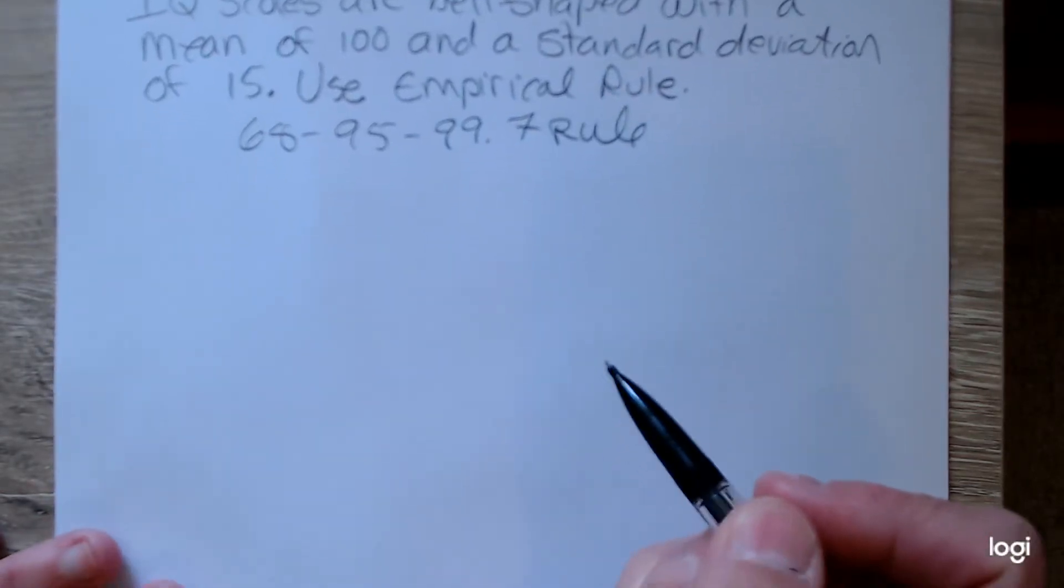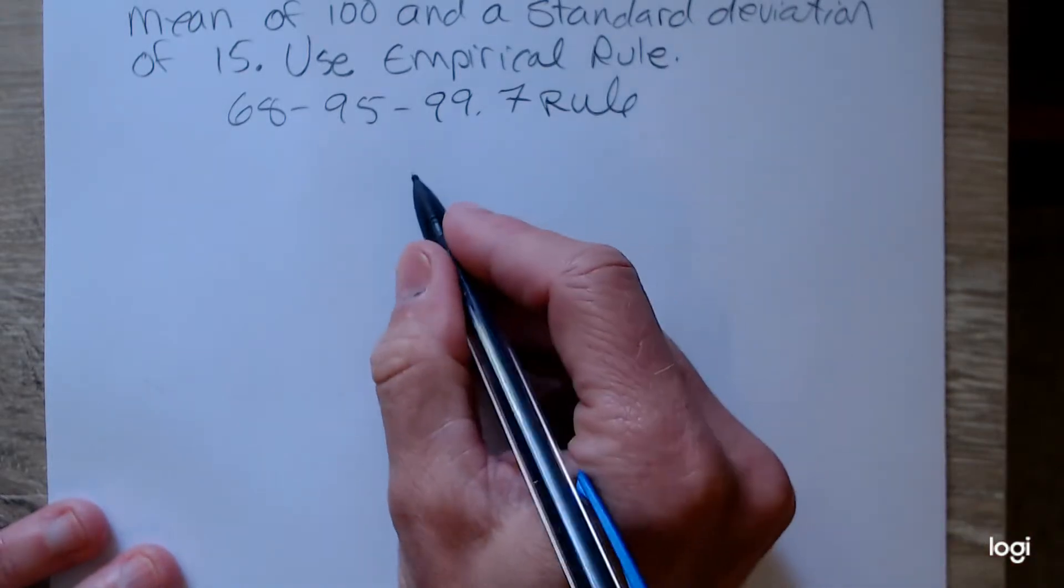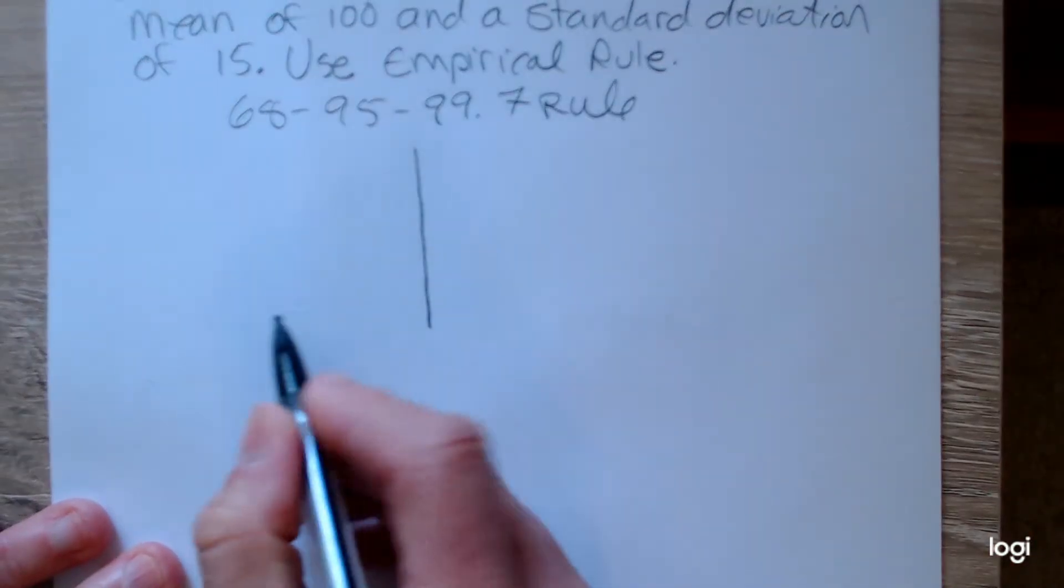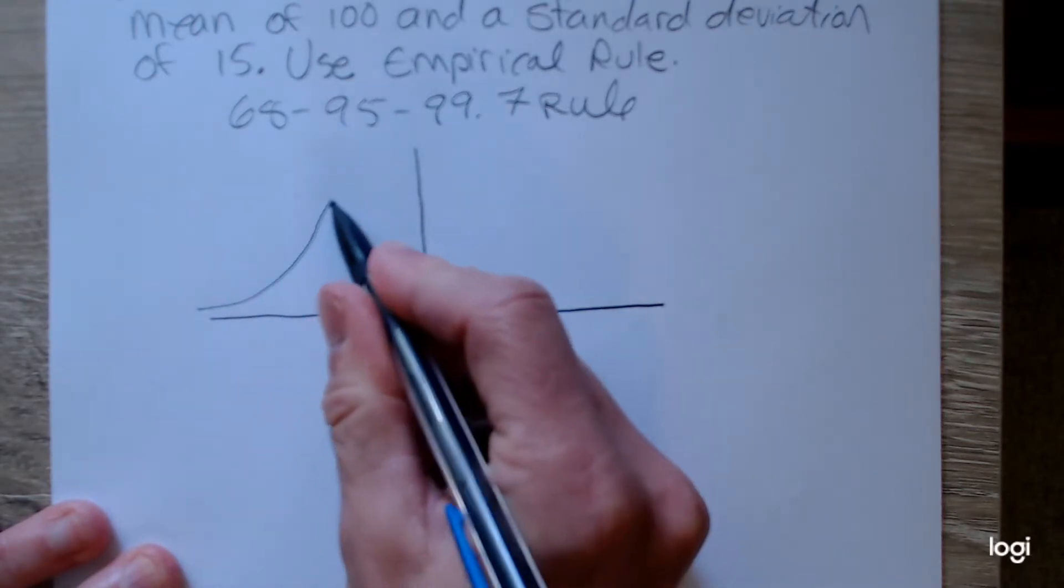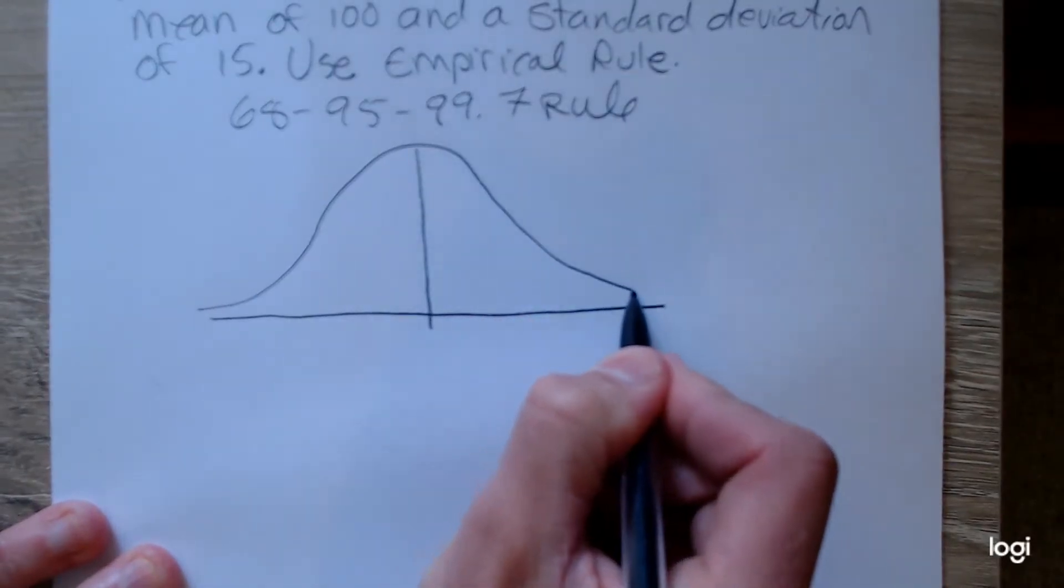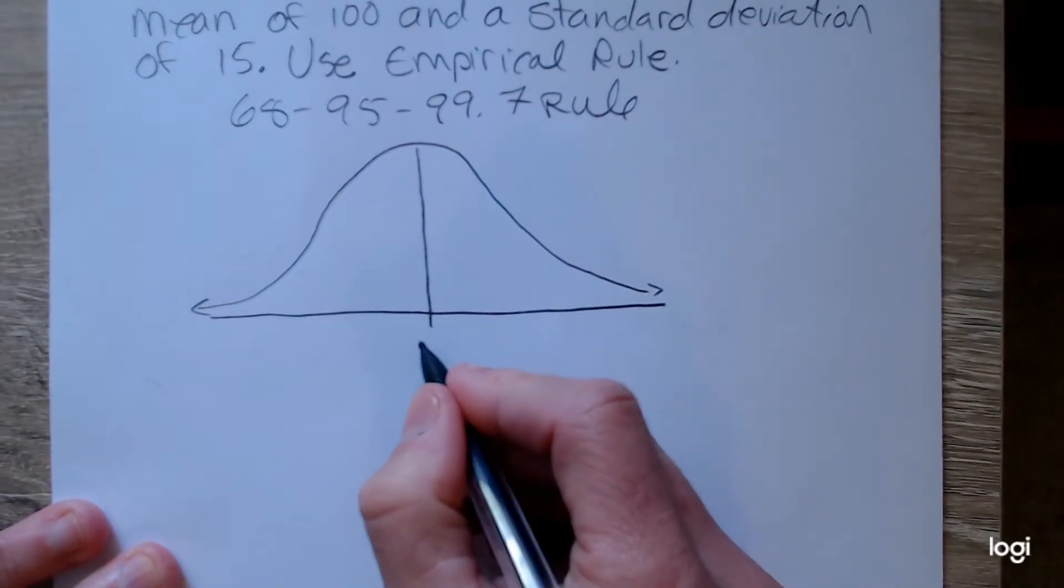So I find it helpful to sketch a bell, sketch what's given. And forgive me, I'm not an artist. And for this example, the mean was 100.